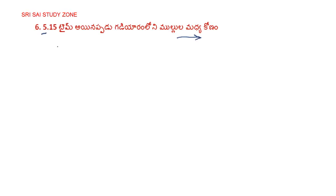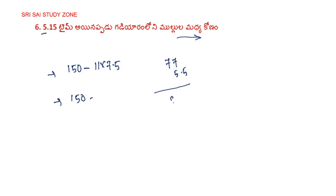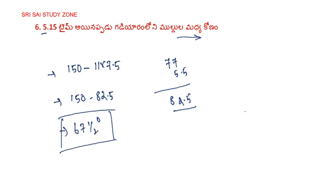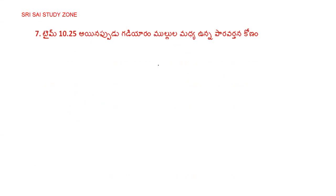Next, we have 5:15. So 150 minus 11 by 2 into 15, and then 11 into 7.5. That is equal to 150 minus 82.5. Then 11 divided by 2 is 5.5. So this is equal to 67 and a half degrees. Okay, next question.